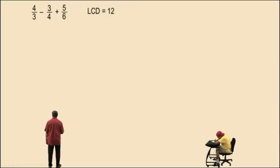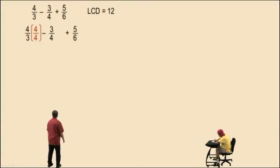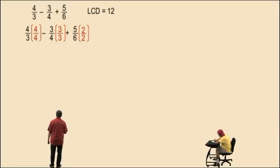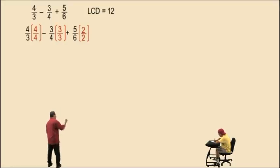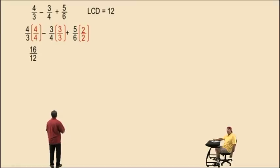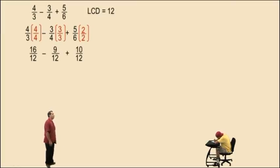Now let's change each fraction to have that denominator. The 4 thirds we need to multiply by 4 over 4. Remember, 3 fourths multiplied by 3 over 3, and the 5 sixths by 2 over 2. Remember, how do we multiply fractions, Charlie? Straight across the top, straight across the bottom. So 4 thirds turns into 16 twelfths, 3 fourths turns into 9 twelfths, and 5 sixths turns into 10 twelfths.